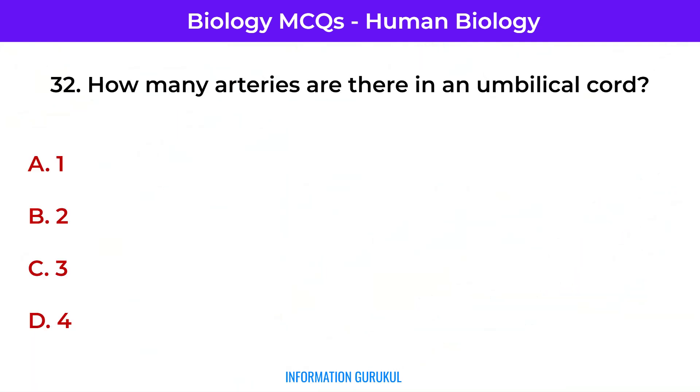How many arteries are there in an umbilical cord? Two.